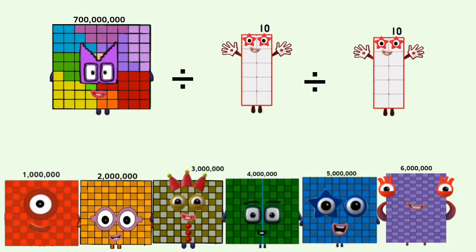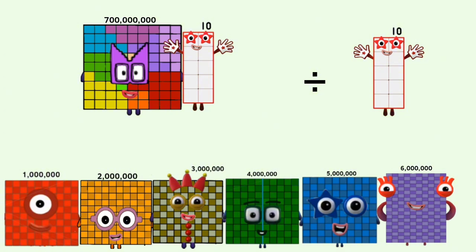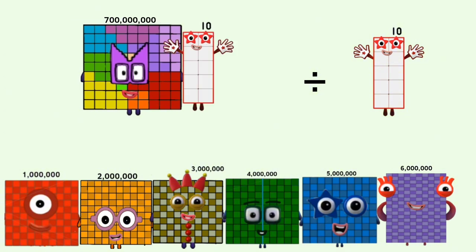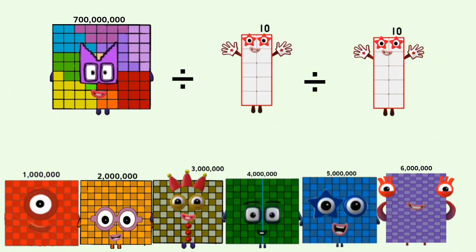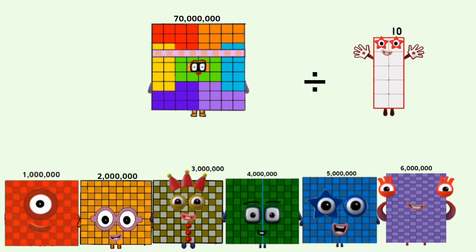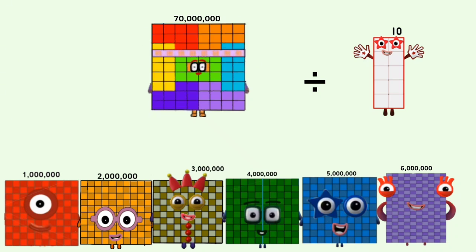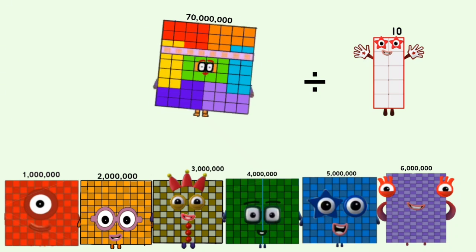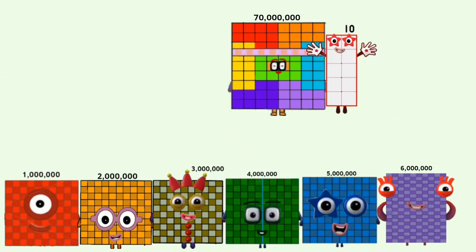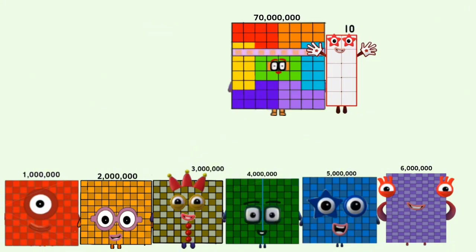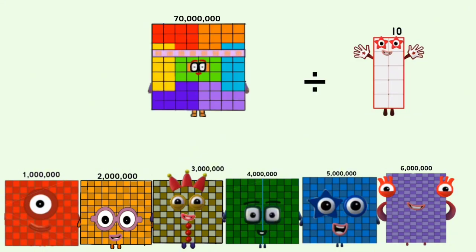700,000,000 divided by 10 equals 70,000,000. 70,000,000 divided by 10.